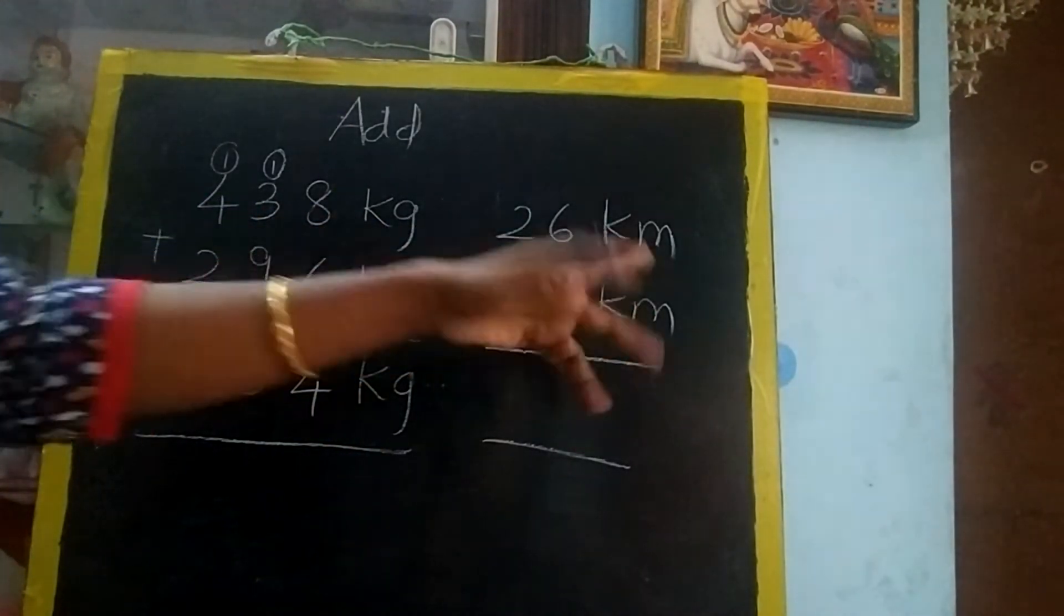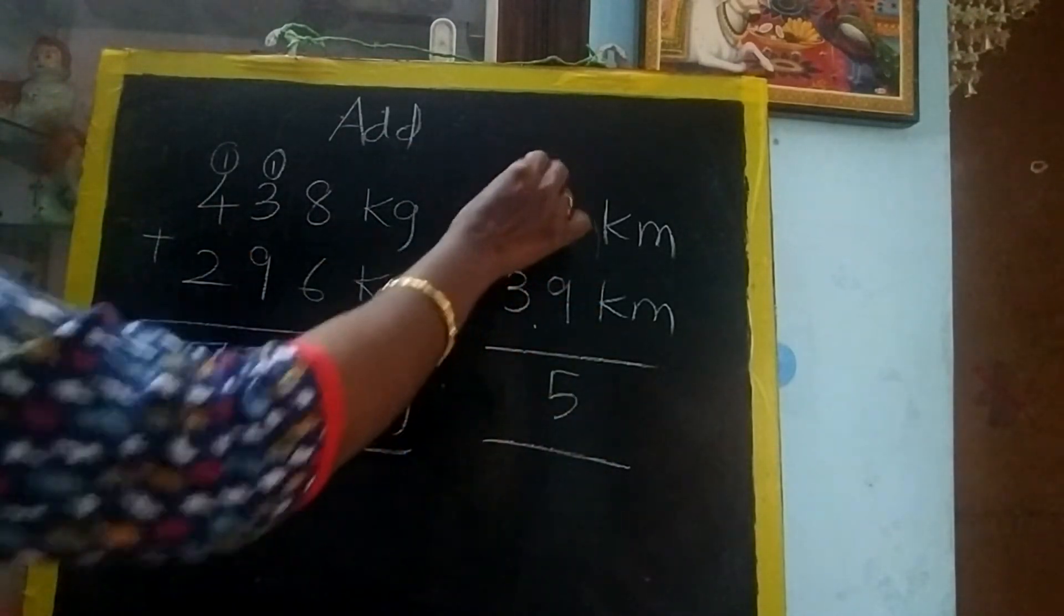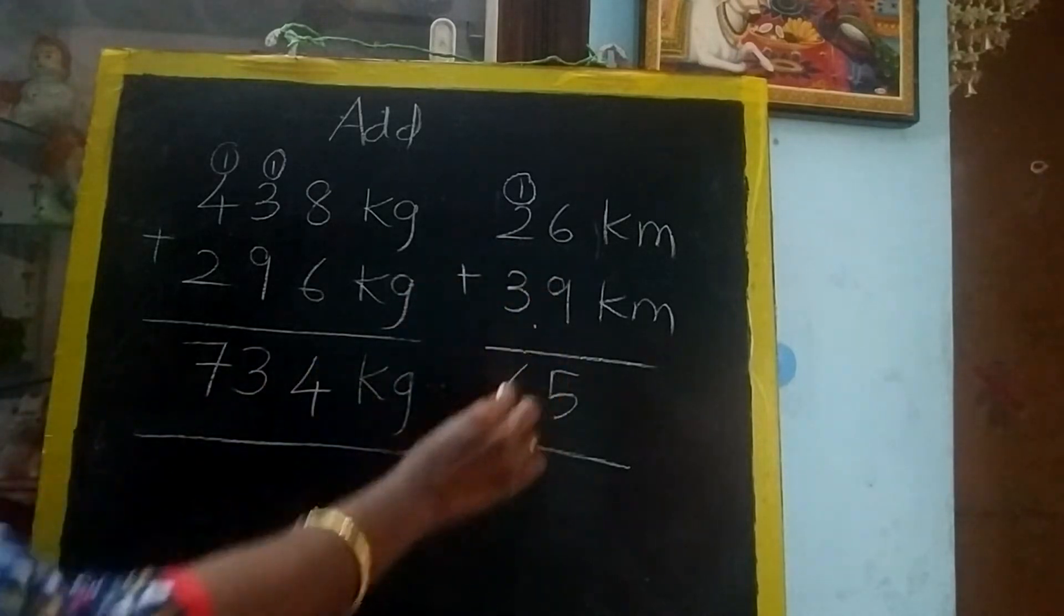Now you see km, km. Yes, both are same units. Now add 6 plus 9, 15. 1 carry over. 1 plus 2, 3. 3 plus 3, 6.